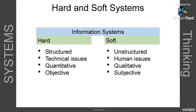Now we have another important thing to think about: hard versus soft systems. Hard systems are structured, focus on technical issues, are quantitative in nature, and provide objective views of a system. Soft systems, on the other hand, are unstructured, often deal with human issues, are qualitative in nature, and may be more subjective — more on that continuum perspective. But the systems we use as information systems professionals are both: they're a combination of hard and soft systems. Some may be more soft than hard and some more hard than soft, but they're a combination.